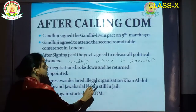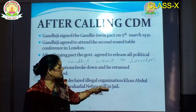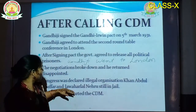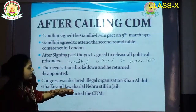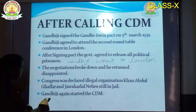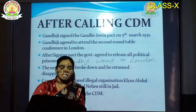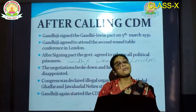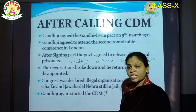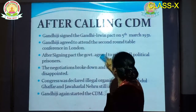Khan Abdul Ghaffar Khan and Jawaharlal Nehru were still in jail. When Gandhiji returned back from London, he found that they were still in jail. So Gandhiji again started the CDM. He told the people that now we have to start the Civil Disobedience Movement again. That is the second phase of the Civil Disobedience Movement. He wanted mass mobilization for CDM 2.